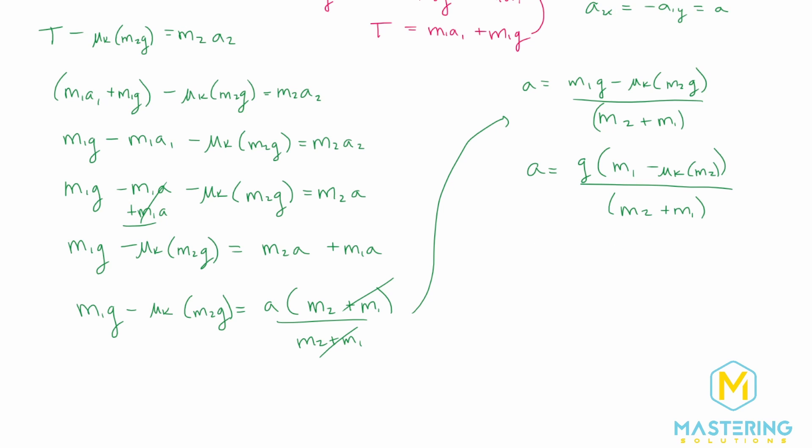So now is where we can plug in all of our numbers. So acceleration is equal to 9.8 meters per second squared and then m1 is one kilogram and then mu sub k in this one we said was 0.2 times m2 which was 2 kilograms and then all of that and then we'll divide that by 2 kilograms plus 1 kilogram.